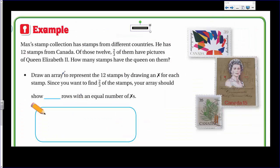Let's look at another problem here. It says Max's stamp collection has stamps from different countries. He has 12 stamps from Canada. Of those 12, two thirds of them have pictures of Queen Elizabeth II. How many stamps have the queen on them?